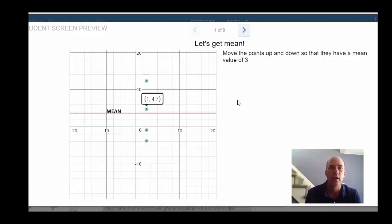Here's an example of up and down points. Here students are given 5 different points and they're asked to move them so it creates a data set with a mean value of 3. So students can move any of the 5 points.